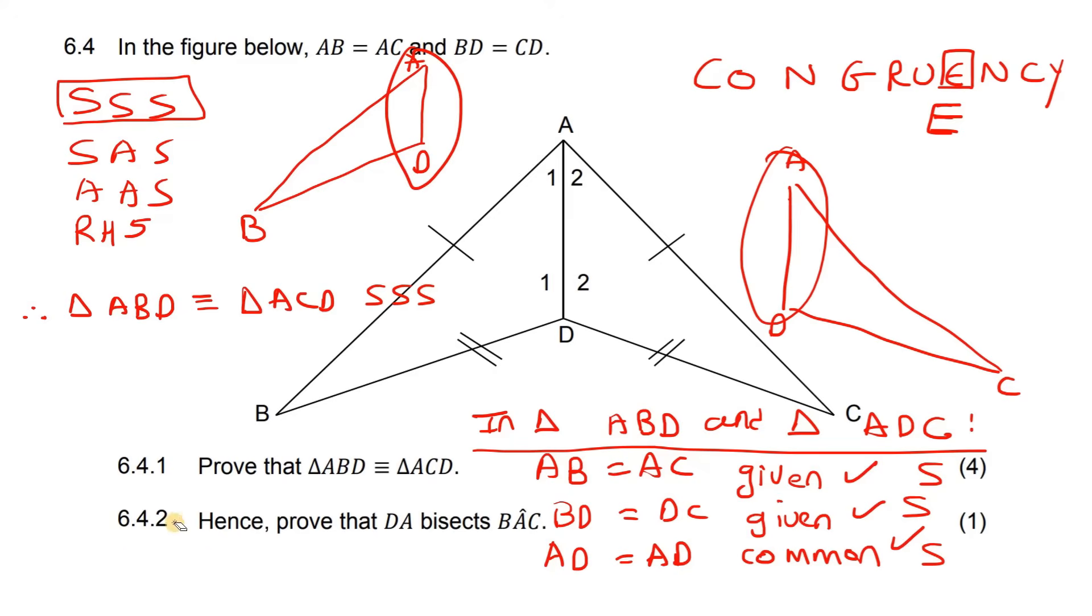Then this last one says, hence, prove that DA, so DA is this one over here, bisects BAC. So, where's BAC? Well, to find BAC, you start at B, then you go to A, and then you go to C. There we go. Now, let's talk about this a little bit further.